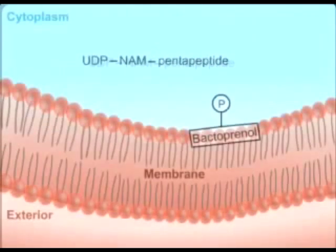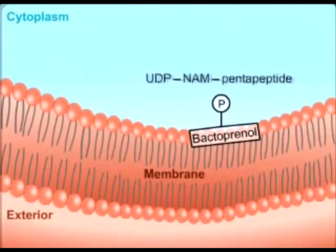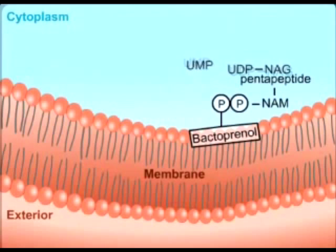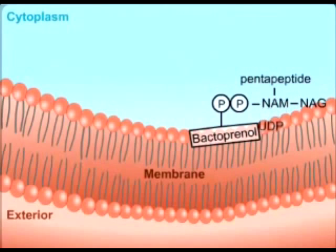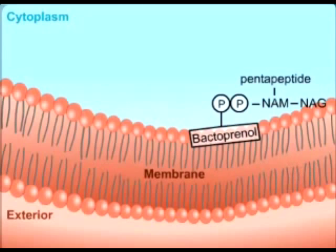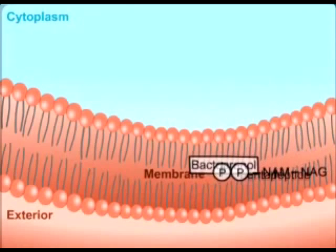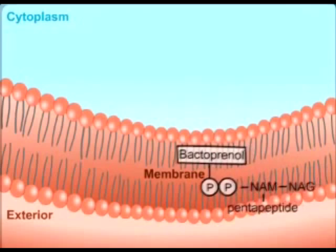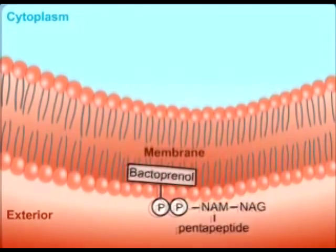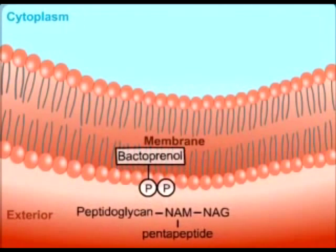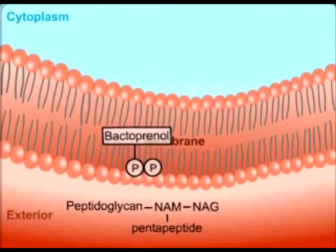The NAM pentapeptide is transferred from UDP to bactoprenol phosphate at the membrane surface. Then, NAG is transferred from UDP-NAG to the bactoprenol-NAM pentapeptide to form the final disaccharide pentapeptide precursor. The completed NAM-NAG precursor is transported across the membrane to its outer surface by the bactoprenol carrier lipid. The disaccharide pentapeptide is then transferred to the growing end of the peptidoglycan chain to lengthen it by one repeat unit.